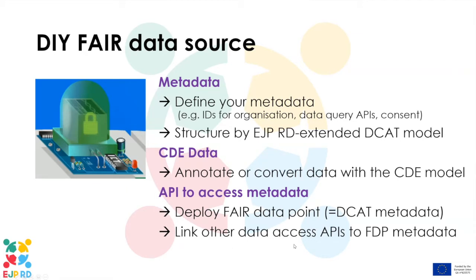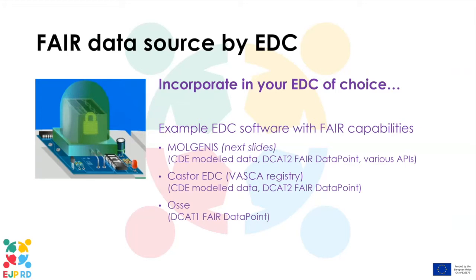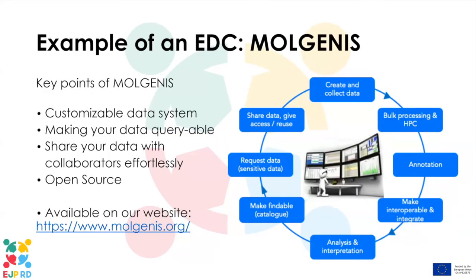You can also link other data access APIs to that metadata. Another way of doing it is by incorporating all of that into your electronic data capture system. Examples of software with FAIR capabilities include Molgenis. There's also the COSTO system where we've done a first example — that's the FASCA registry. The very first FAIR data point was also done at a hackathon by the OCT.